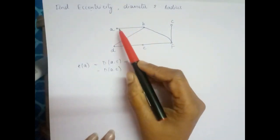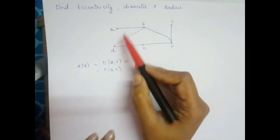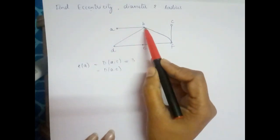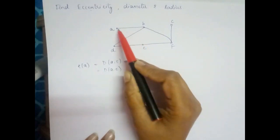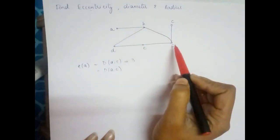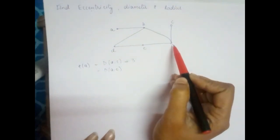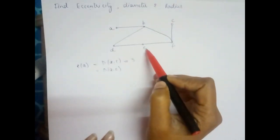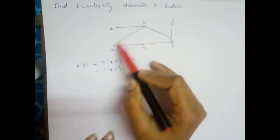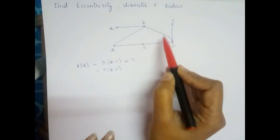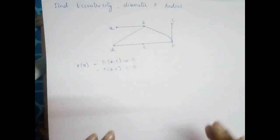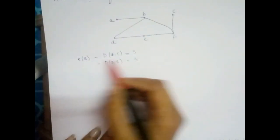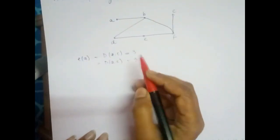For the distance between a and e: going a to b, b to d, d to e, or a to b, b to f, f to e — both give 3 edges. Since the maximum distance from a to any other vertex is 3, the eccentricity of a is 3.